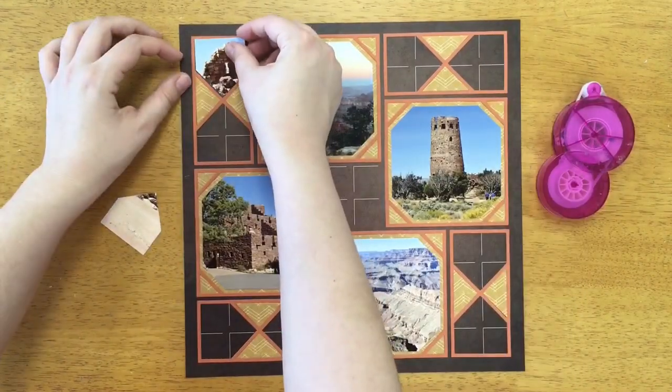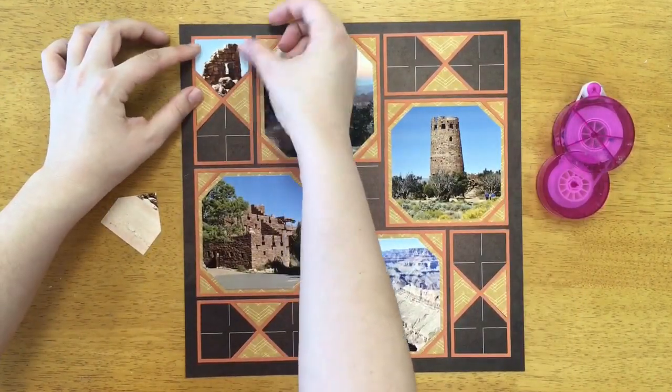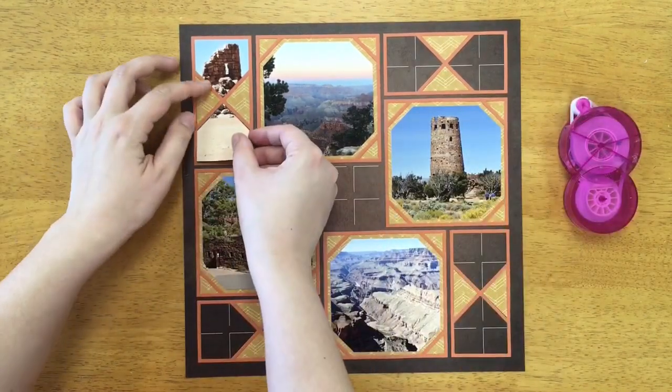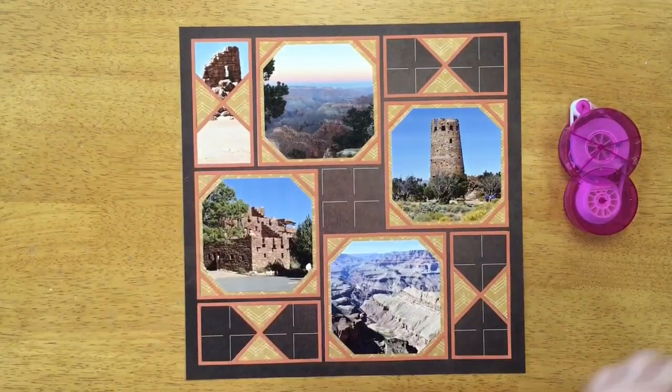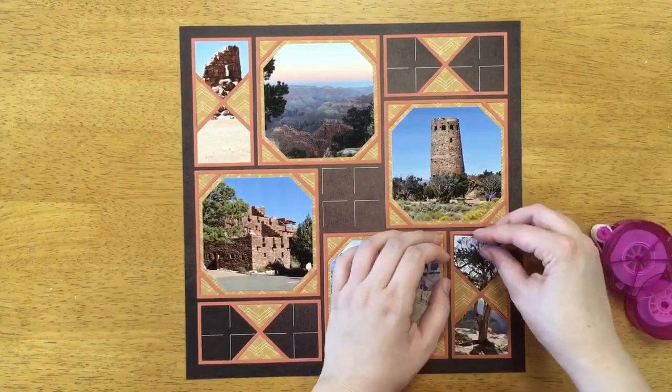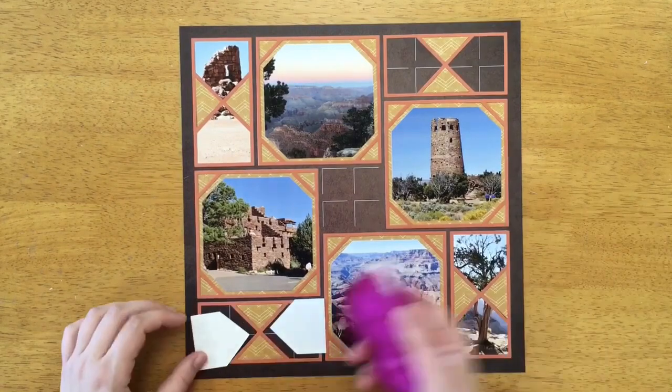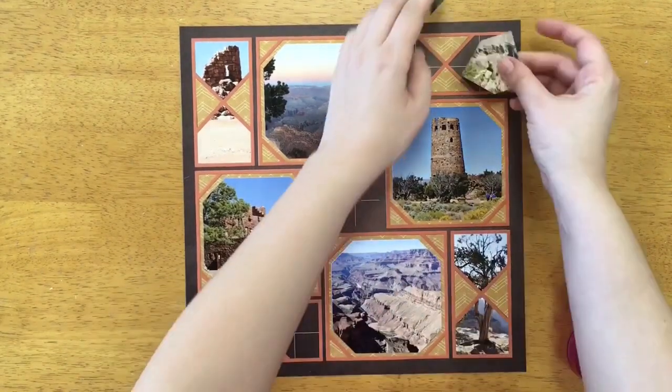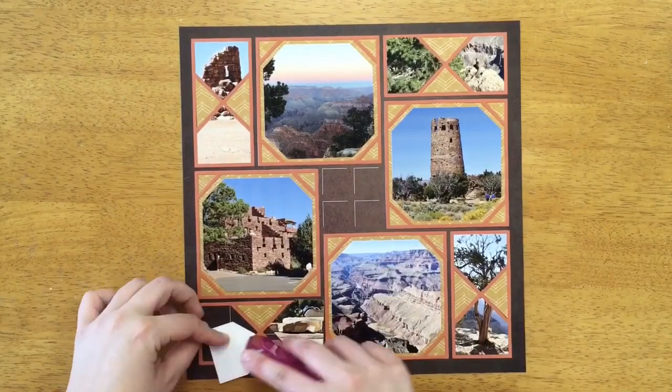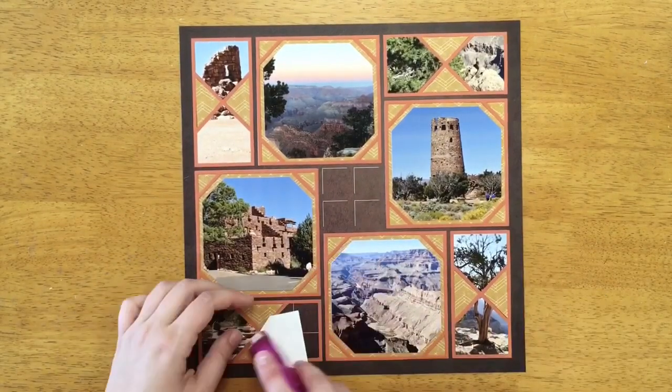The last part for these is placing in my photos which is again the easiest part. I use my repositional glue and place it right on in. So I'm going to finish up the last two photos here. As you see it's really easy. You put the glue on the back and place it right in the spot that it fits in perfectly.